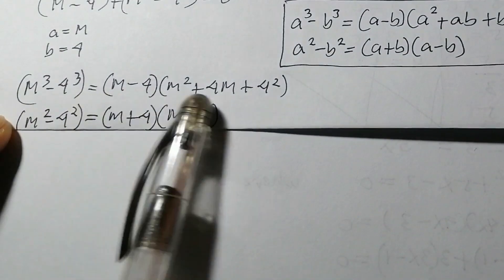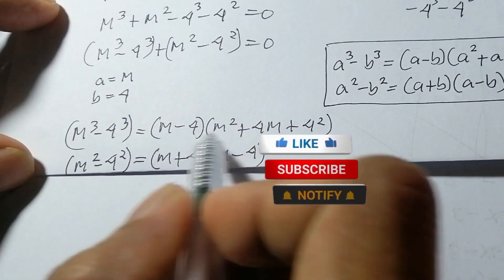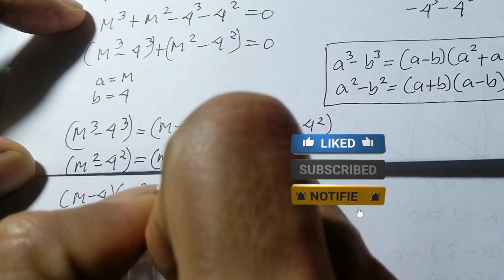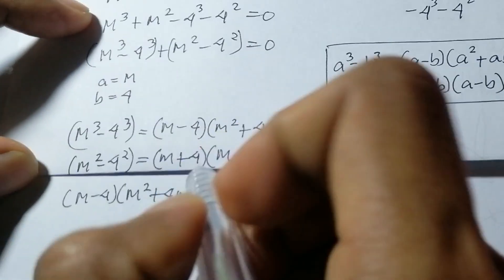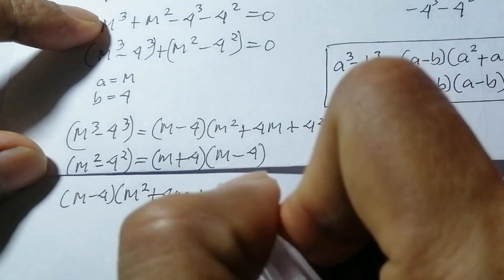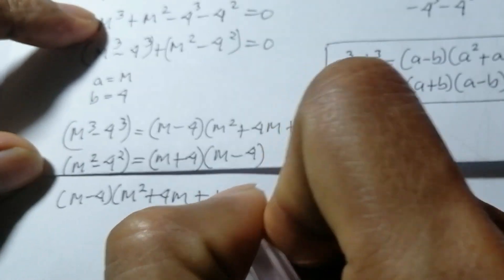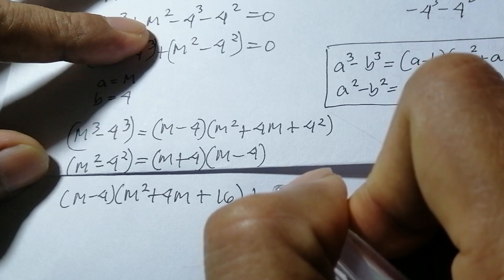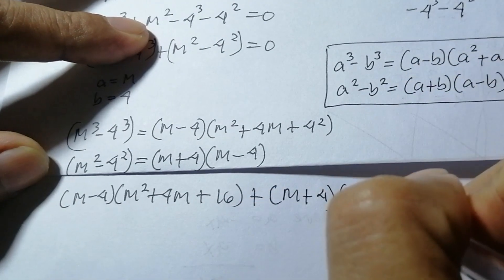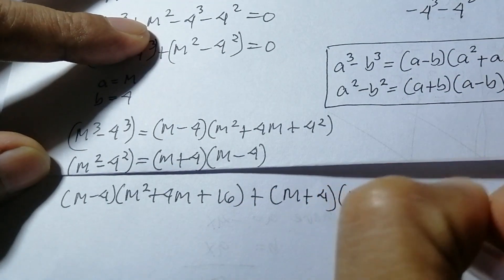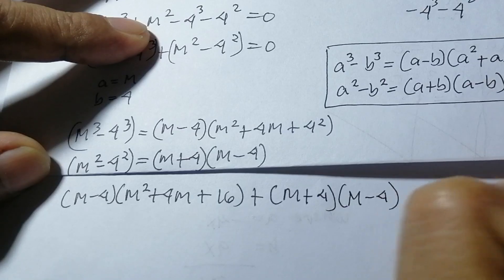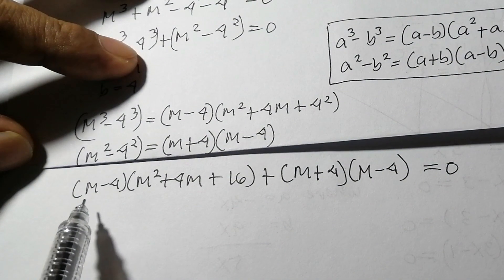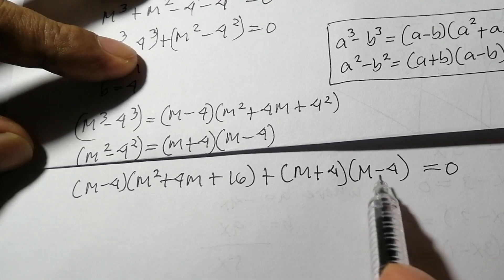Now we combine the special products: (m minus 4)(m² plus 4m plus 16) plus (m plus 4)(m minus 4) equals zero. As you can see, they share the common factor (m minus 4).